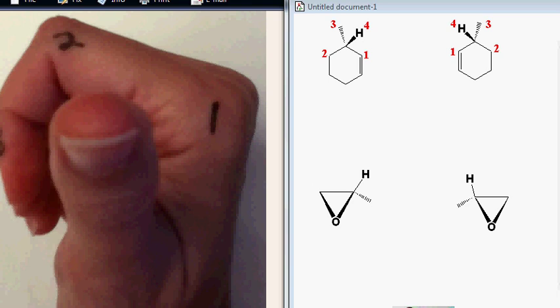If you can match up the 1, 2, 3 to where your knuckles would be, if it matches with your right hand, it's R. If it matches with your left hand, it's S.